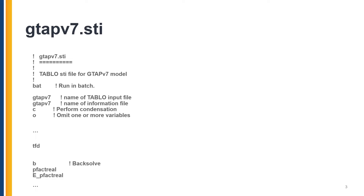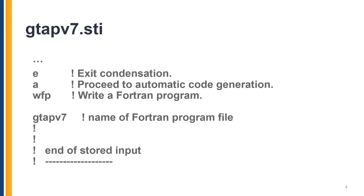For now, let's not make any changes — we can have a demonstration video later. But the next command after some other variables is for back-solving. In this case, the variable pfacgrill, and I'm going to do that using the equation name e_pfacgrill. If we continue to examine this STI file, you will see that towards the bottom, you exit the condensation and proceed to automatically generate Fortran code, which is what we implement in Run-GTAP.